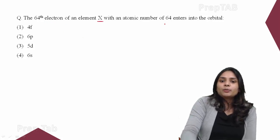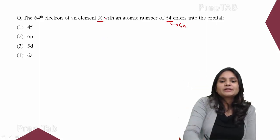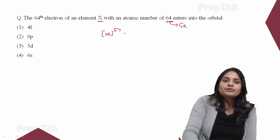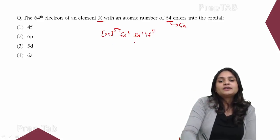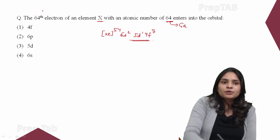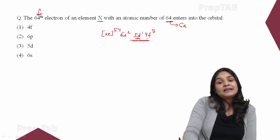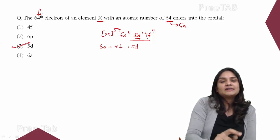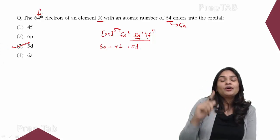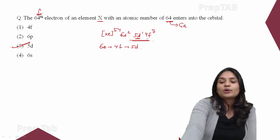Third exam question: the 64th electron of element X with atomic number 64 enters which orbital? Atomic number 64 is gadolinium. Configuration: [Xe] (54 electrons), then 6s² (56), then 5d¹ (57), then 4f⁷ (fills electrons 58–64). The 64th electron fills into 4f. Remember: filling order is 6s first, then 4f, then 5d. So the correct answer is that the 64th electron enters the 4f orbital. Be careful not to make mistakes here — always write out the configuration carefully.